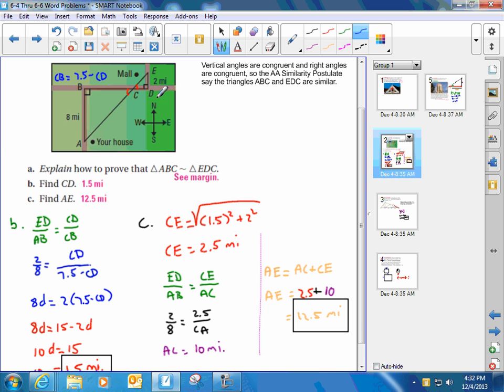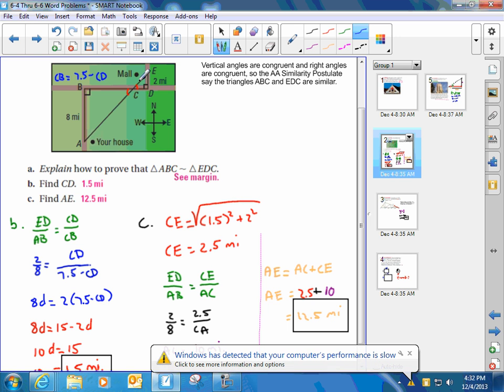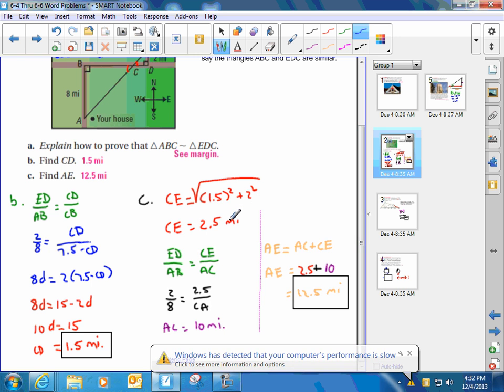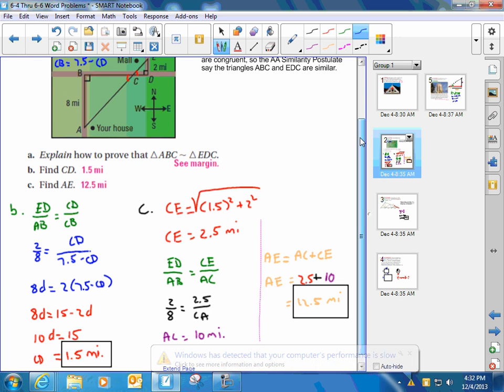Now, I can also find AC using similarity, using the properties of similarity. Once I have AC, I can add AC to CE to get AE. So let's first solve for AC.